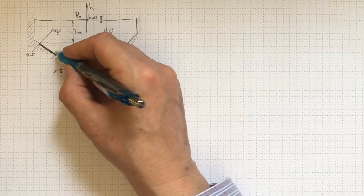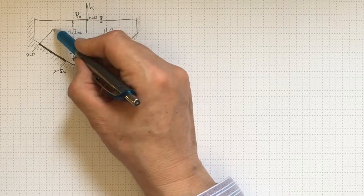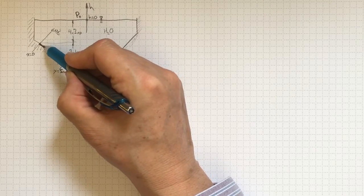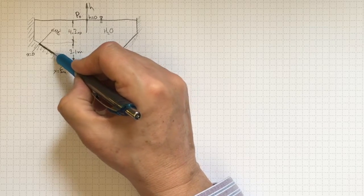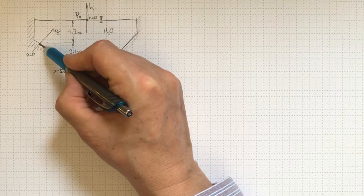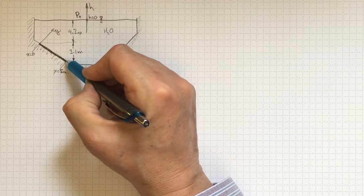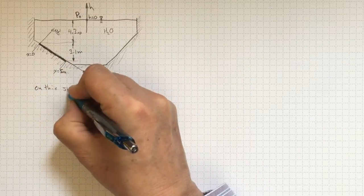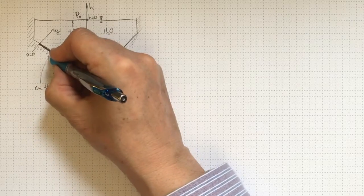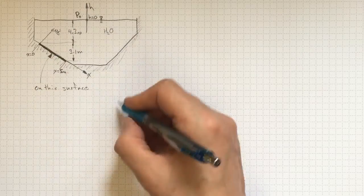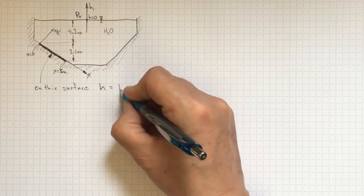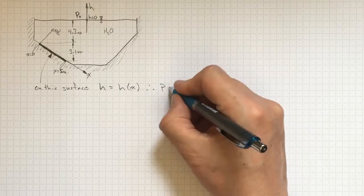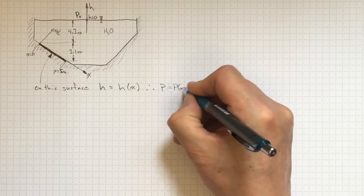If z is horizontal, and if y is fixed equal to zero on the surface that we're interested in, then we really only need to find the function for pressure as a function of x location on this surface. On this surface, the elevation is a function of x only, therefore pressure will be a function of x only as well.